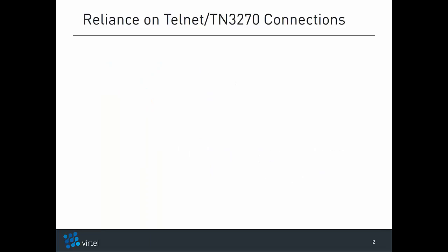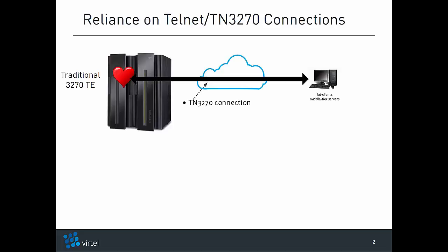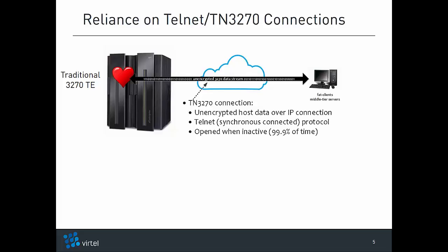Let's start with a brief reminder of the security features of traditional 3270 terminal emulators. Traditional 3270 terminal emulators rely on a TN3270 connection between the mainframe and either fat clients or middle-tier servers. The problem with TN3270 connections is that they transfer unencrypted 3270 data over IP connections using a synchronous connected communication protocol, which means the connection remains permanently open throughout the session, even when inactive.